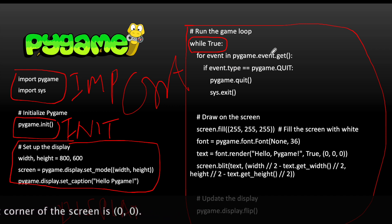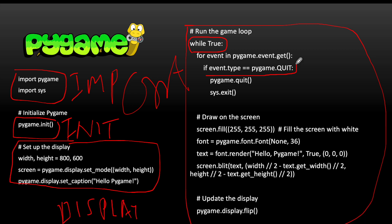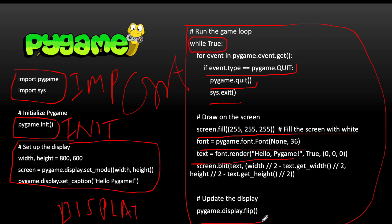The only way the loop exits is when you close the game window. When the event type is pygame.QUIT, you call pygame.quit() and exit the program with sys.exit(). Inside the loop you can fill the game screen with a white background, select a font, and write 'Hello PyGame'. Then you do screen.blit() and pygame.display.flip() for rendering.